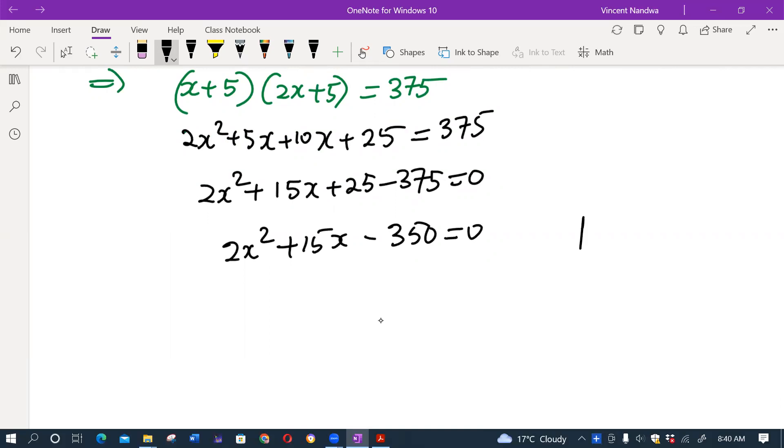So here product is minus 350 by 2, which is minus 700. Sum is 15, and the numbers are 35 and minus 20. So we'll have 2x squared minus 20x plus 35x minus 350 equals zero.